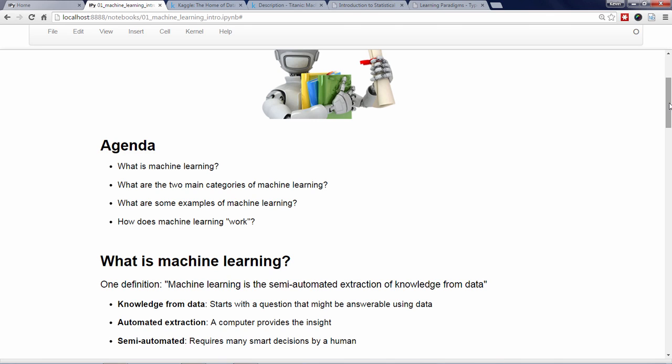You have a question you're trying to answer, and you hypothesize that your question might be answerable using the data. Second, machine learning involves some amount of automation. Rather than trying to gather your insights from the data manually, you're applying some process or algorithm to the data using a computer so that the computer can help to provide the insight.